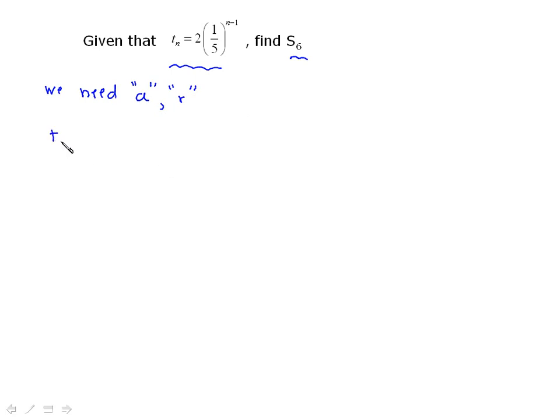And there's two ways you can go after that. Using the term formula, you can just go T1 is equal to 2 times 1 fifth. Replace the n with 1. So, that's 2 times 1 fifth to the 0. 1 fifth to the 0 is 1. So, T1 is equal to 2. So, A is equal to 2.